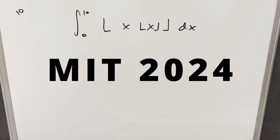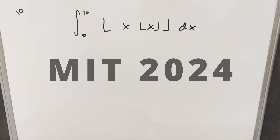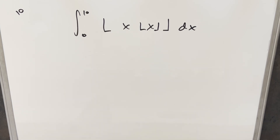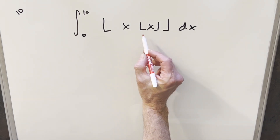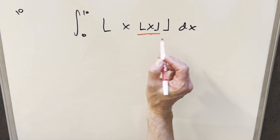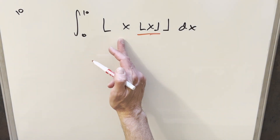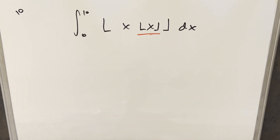We have integral number 10 from the MIT integration bee regular season. We have the integral from 0 to 10 of the floor function of x times the floor function of x dx. This is a little bit different than some of the floor problems we've done in the past because in this case we actually have the floor within the floor, so this is going to make it a little bit more complicated.